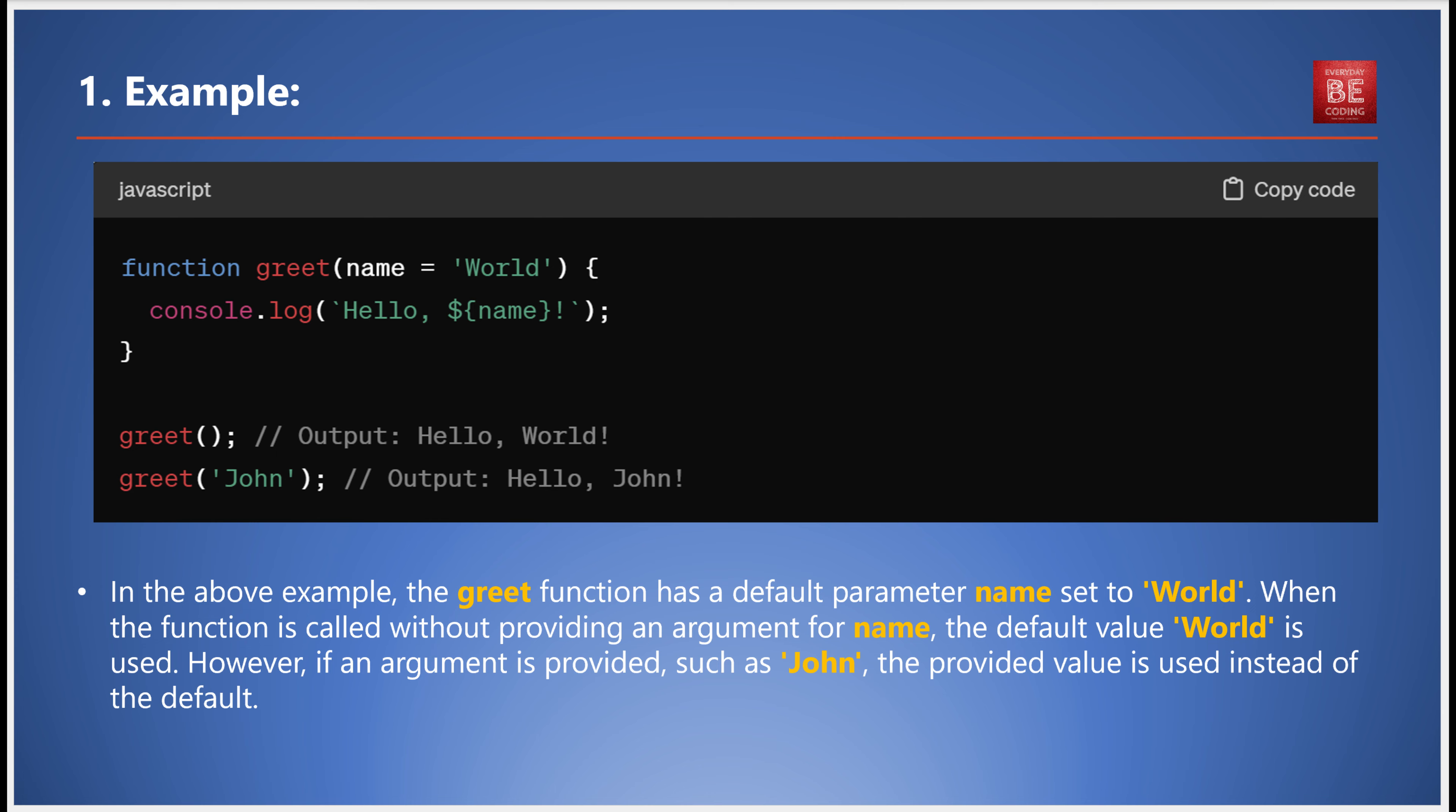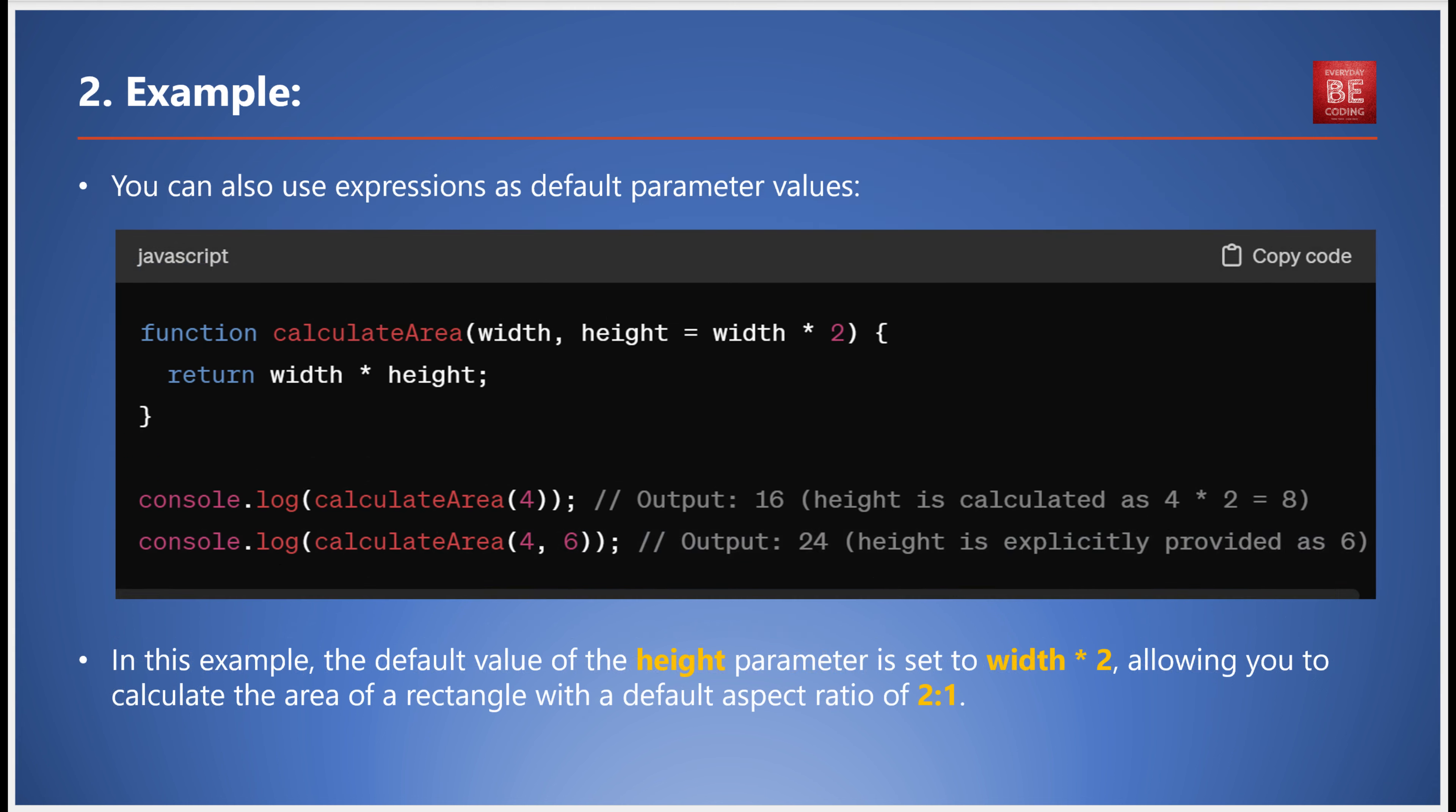But that's not all. Default parameters in JavaScript can also be expressions. Here's an example. In this function, the default value of the height parameter is set to width times two. This allows you to calculate the area of a rectangle with a default aspect ratio of 2:1.